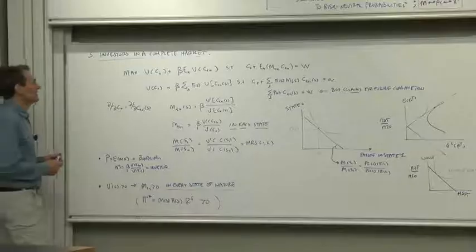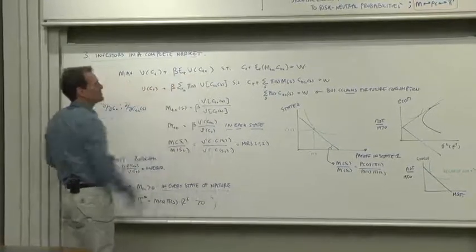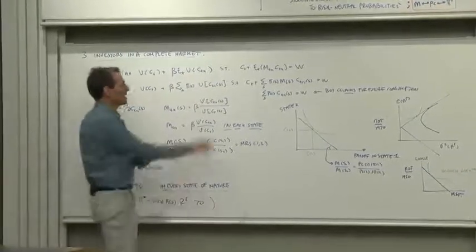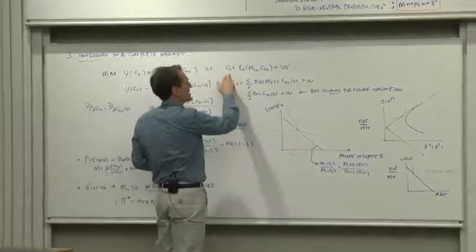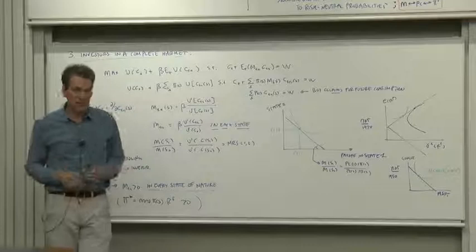What's the investors' problem? Well, here's our friend the utility function, max utility plus expected utility tomorrow, and I'm going to write his budget constraint now as today's consumption plus the discounted value of tomorrow's consumption equals initial wealth.